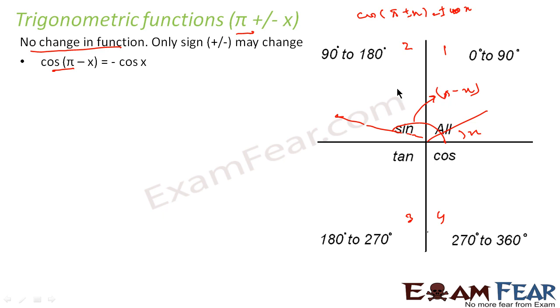We are now concerned about the second quadrant. In the second quadrant, only sin is positive, so cos is negative. Since cos is negative here, cos(π - x) becomes -cos x. The sign changes, but not the function.